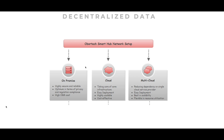Users may connect their on-premise servers for hosting blockchain nodes, or subscribe to the Smart Hub's existing nodes on a Kubernetes cluster of cloud servers. There is also a multi-cloud solution where participants can host nodes in their own cloud servers and connect to the Smart Hub's network.